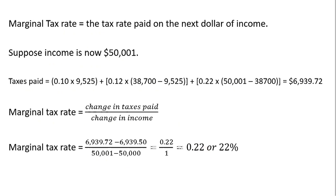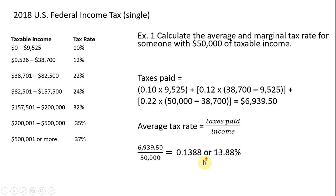Doing the math, we get a marginal tax rate of twenty-two percent. So any dollar of income earned over fifty thousand, the government will take twenty-two cents of that. Note that this twenty-two percent appears directly in the tax table — these rates in the brackets are essentially the marginal tax rate for each individual bracket.